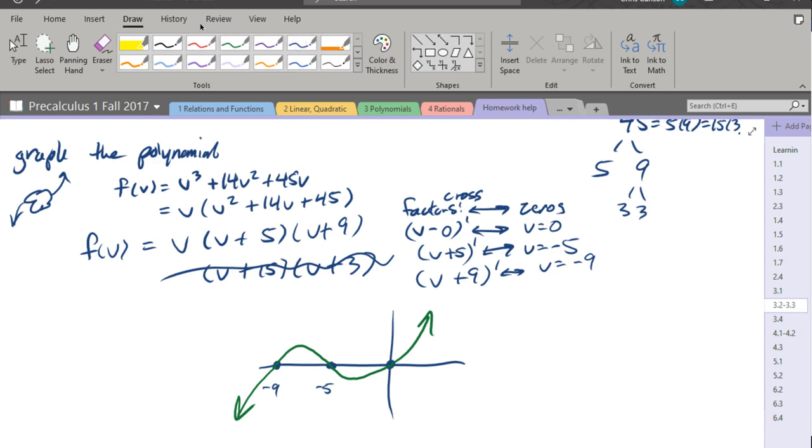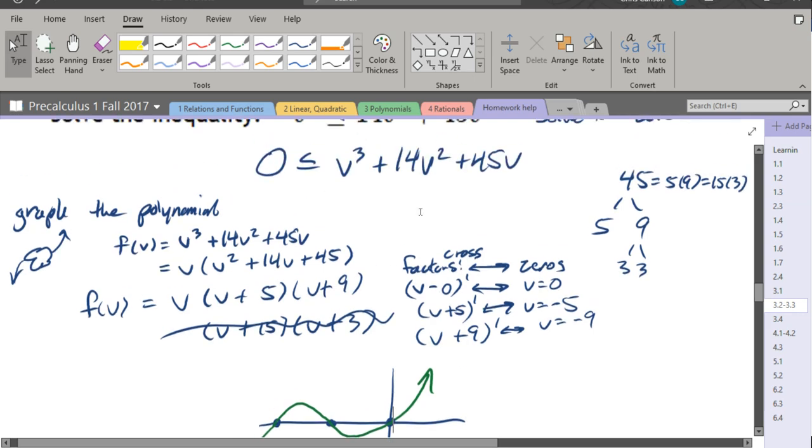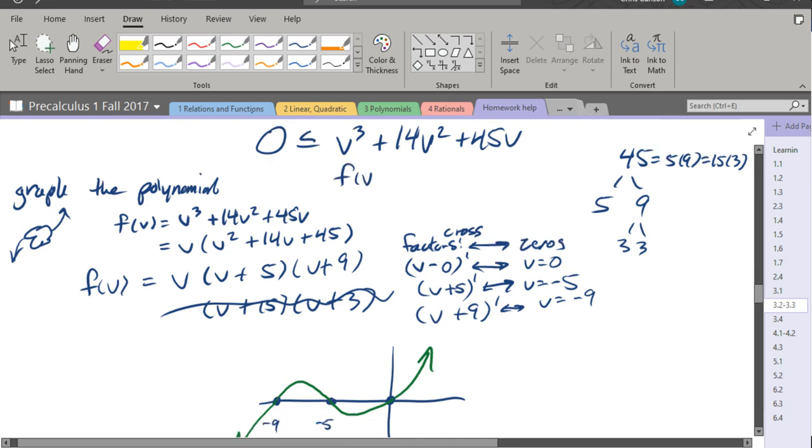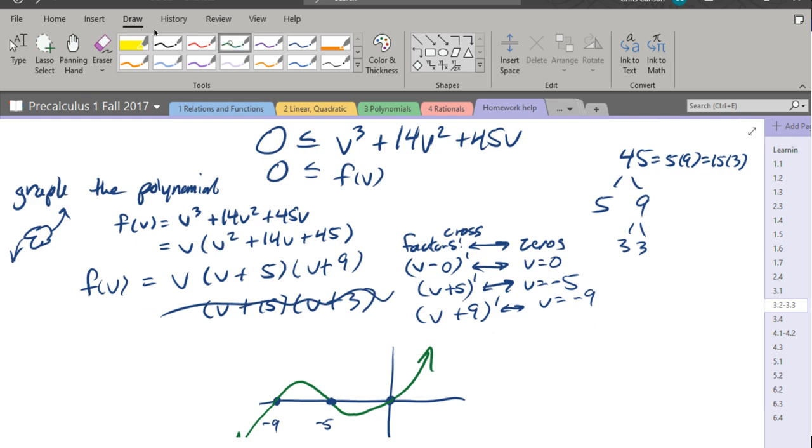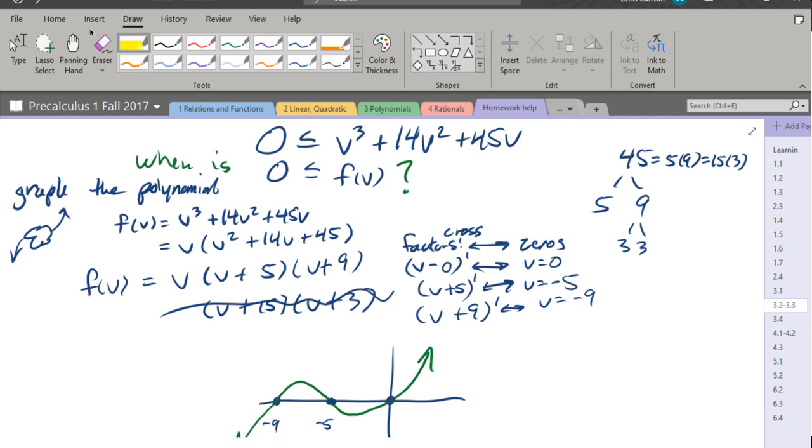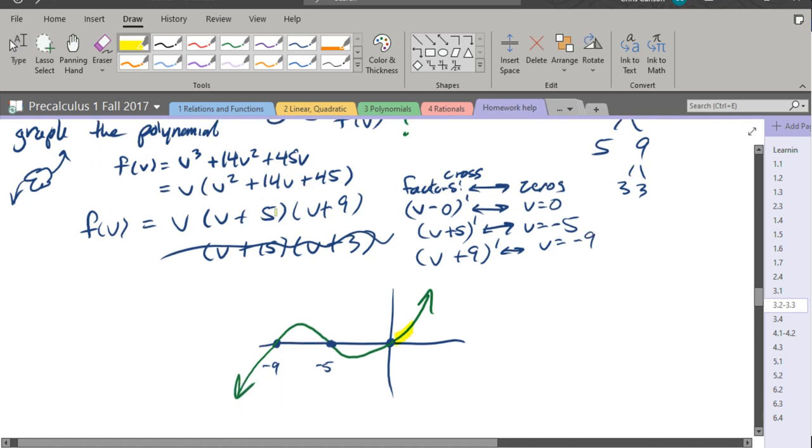Now what we need to do is answer the question that was originally asked. Nothing on this screen is the original question. Up here, I call this right here f of v. So we need to answer the question, when is f of v greater than or equal to 0? And we're going to highlight that on the graph. So that means when is the y value positive?